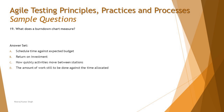Question 19 asks: what does a burndown chart measure? We have been discussing different attributes of agile methodology, including how to provide status updates. One of them is the burndown chart, which talks about the ongoing progress. In simple words, it gives you at any point in time the amount of work remaining to be done in a particular sprint.